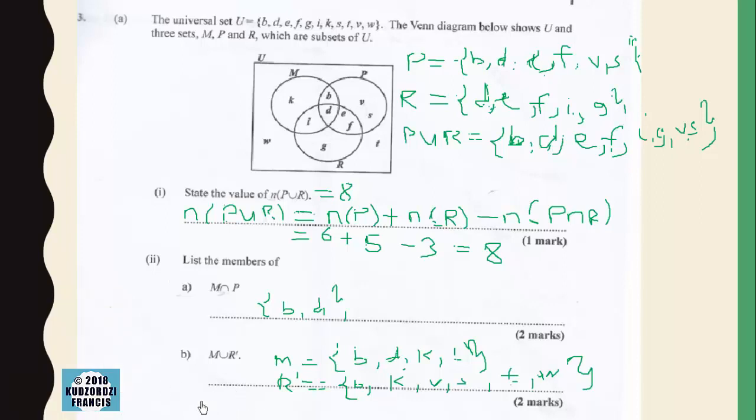The union of these two sets will be equal to b, d, k, i, then we have v, then we have s, then we have t, then we have w. So this is M union R prime.